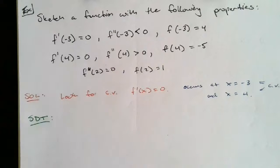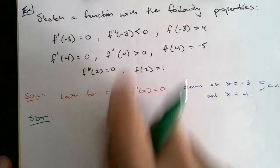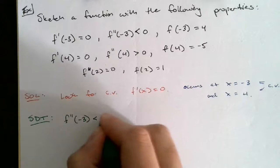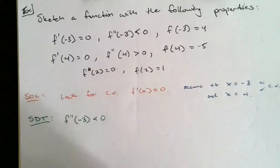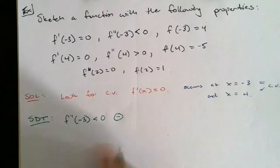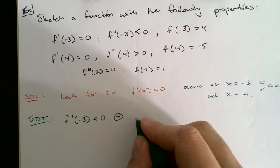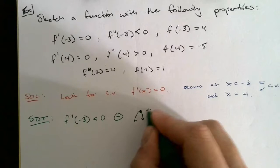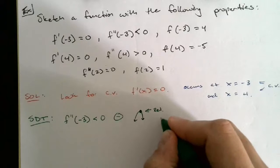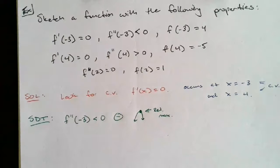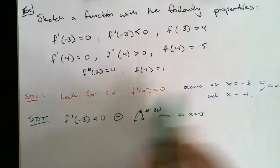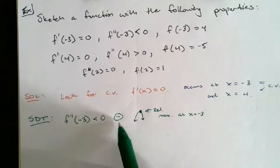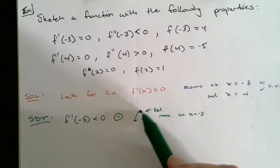Using the second derivative test, you substitute your critical values into the second derivative. We know f''(-3)<0, so it's negative. If the second derivative is negative, that tells you the graph is concave down. If it's concave down, that point has to be a relative max. So we have a relative max at x=-3 because the first derivative told us the slope there is 0, and the second derivative tells us it's concave down.